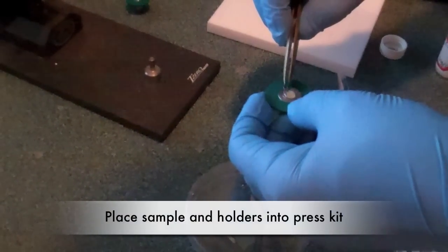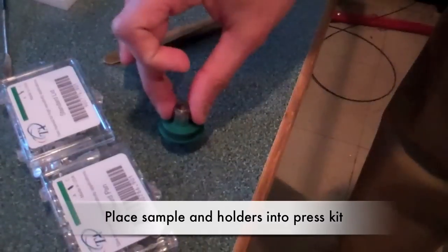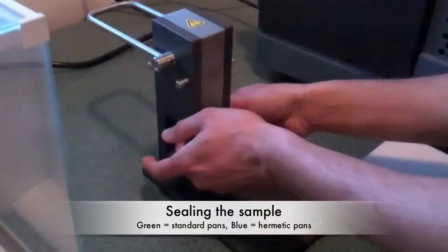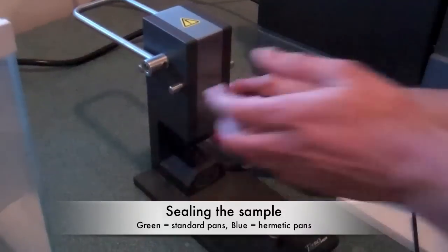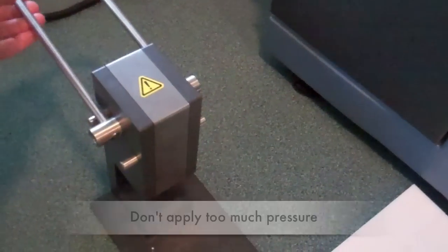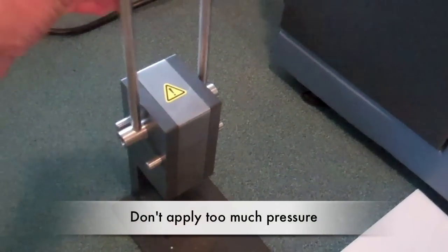Once the sample is weighed out, place the lid on and put the sample in the press kit to seal it. The green holders are for standard pans and the blue holders are for hermetic pans. Place the sample in the bottom holder and place both holder parts into the machine. Then lift the lever and lightly pull down to seal the sample. Don't apply too much pressure as the pan might be crushed.